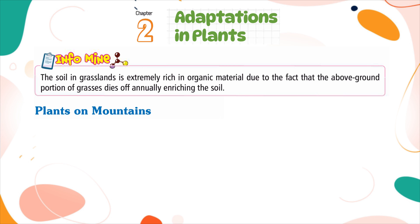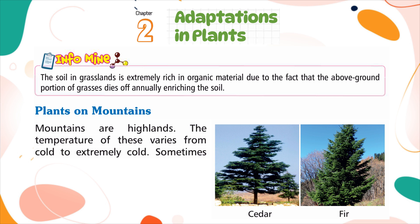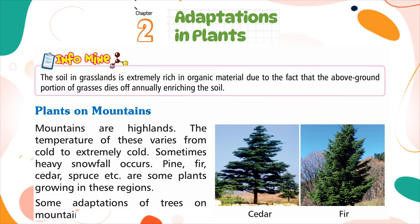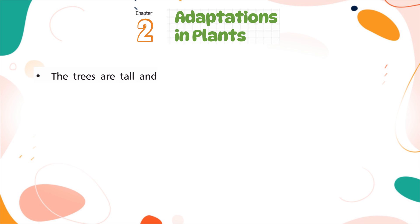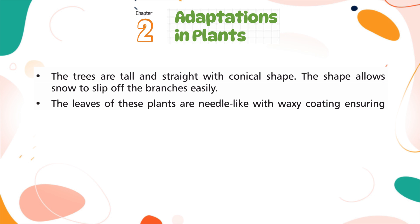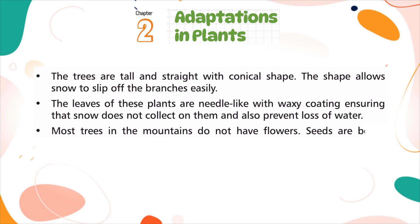Plants on Mountains. Mountains are highlands where the temperature varies from cold to extremely cold, and sometimes heavy snowfall occurs. Pine, fir, cedar, spruce, etc. are some plants growing in these regions. The trees are tall and straight with conical shapes — this shape allows snow to slip off the branches easily. The leaves of these plants are needle-like with a waxy coating, ensuring that snow does not collect on them and also preventing loss of water. Most trees in the mountains do not have flowers; seeds are borne inside cones, which protect the seeds from the cold.